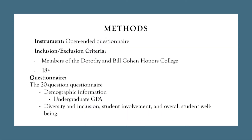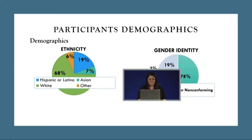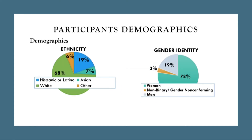For our study, we used a 20-question open-ended questionnaire directed towards members of the Dorothy and Bill Cohen Honors College who were 18 and up. Questions consisted of demographics, as well as questions targeting areas of diversity and inclusion, student involvement, and overall well-being. Of the responses given, most of our participants identified as being white women, which does overall reflect the demographic of the institution itself.